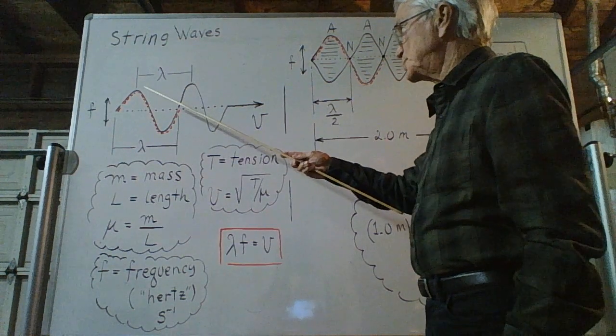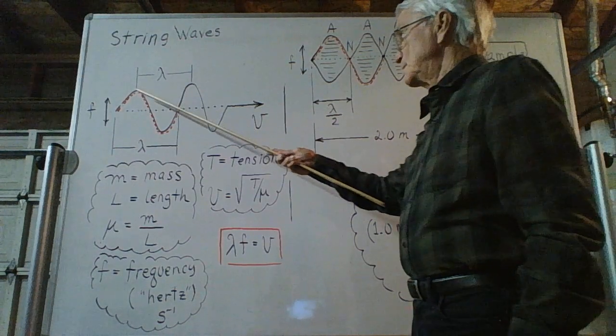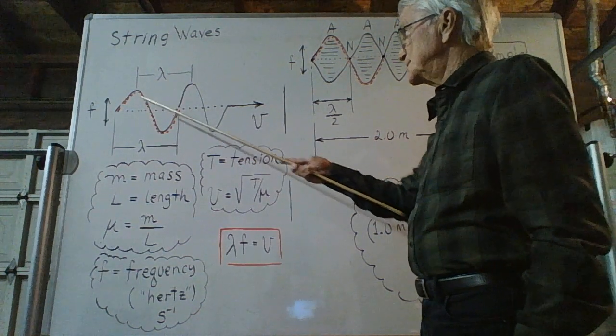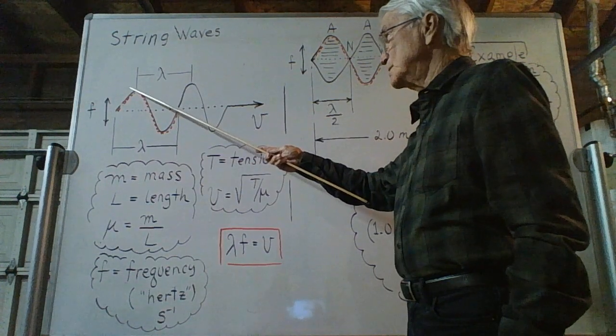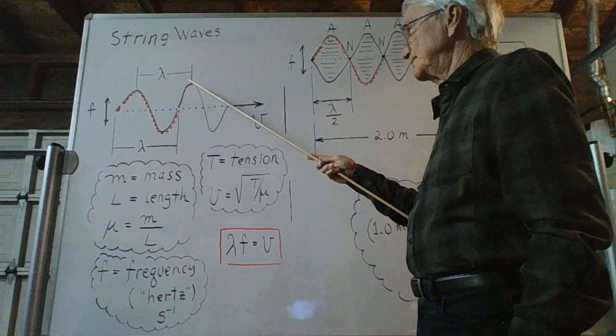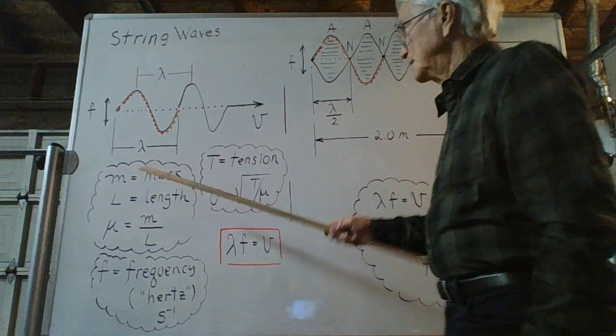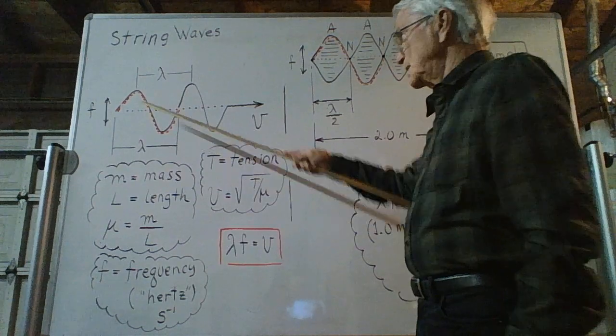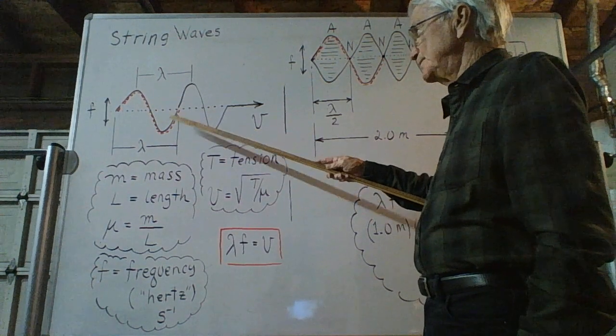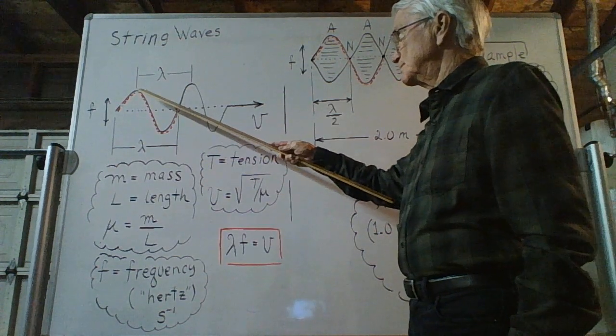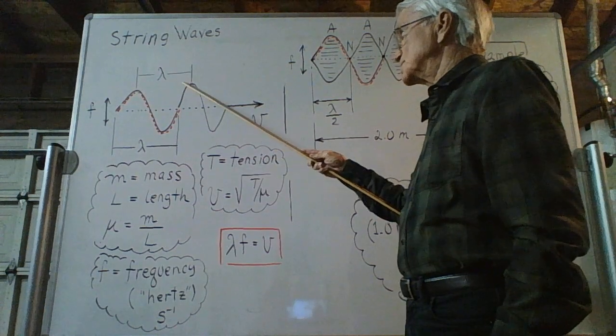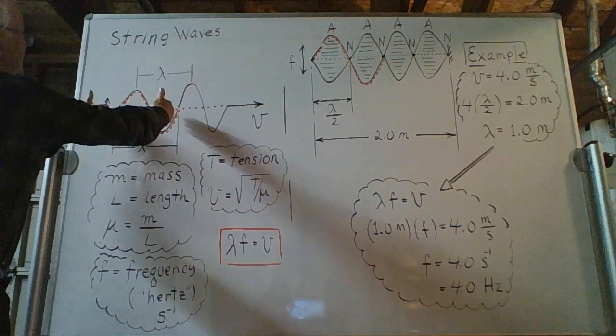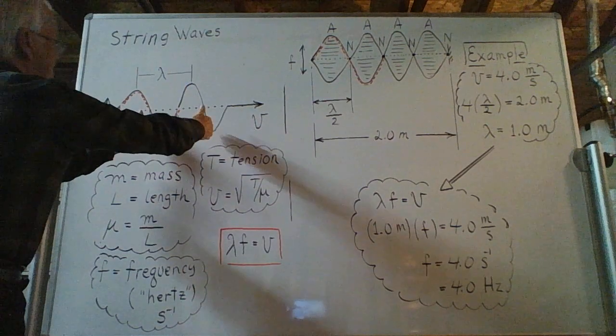Peaks and valleys appear along the length of the string—a maximum there and there, a minimum there and there. The distance between consecutive maxima is called the wavelength of the string wave. It's the same as the distance between consecutive minima, consecutive valleys. I outline in red one full sine wave; that's the same distance as the distance between consecutive peaks.